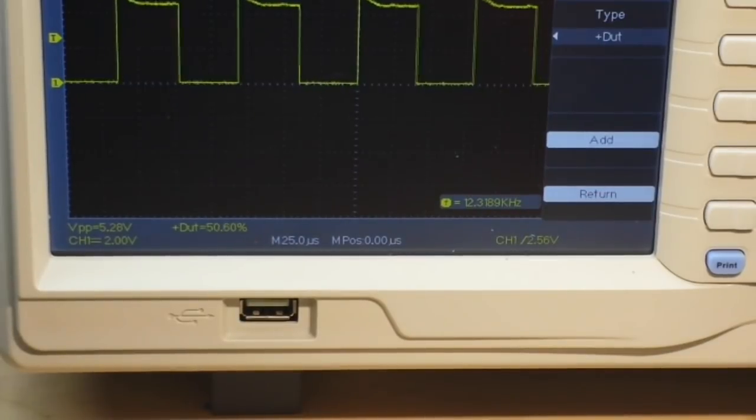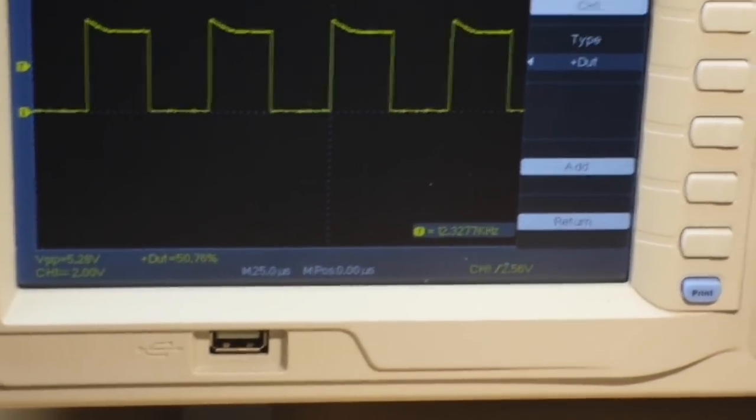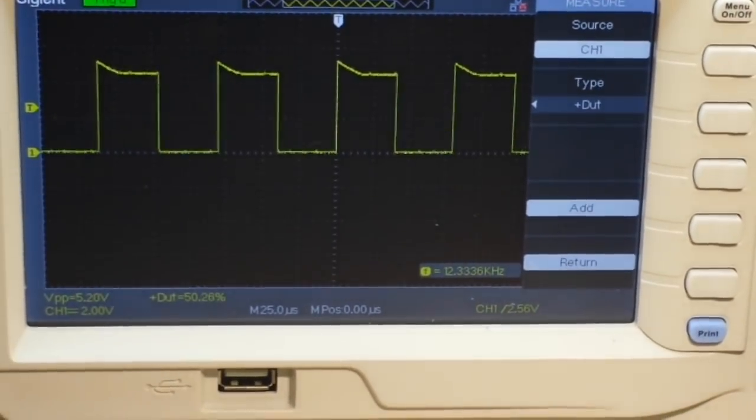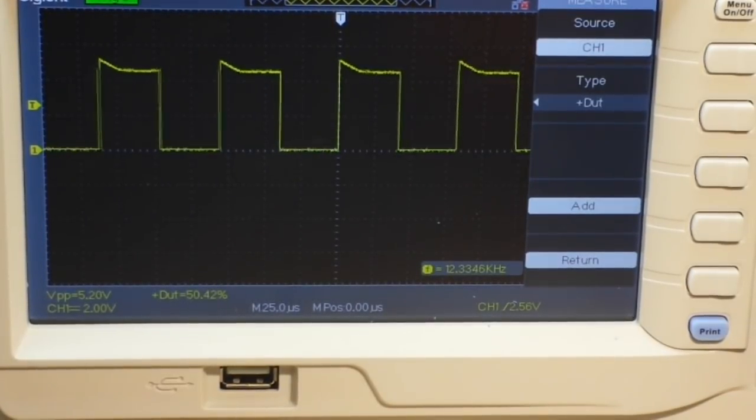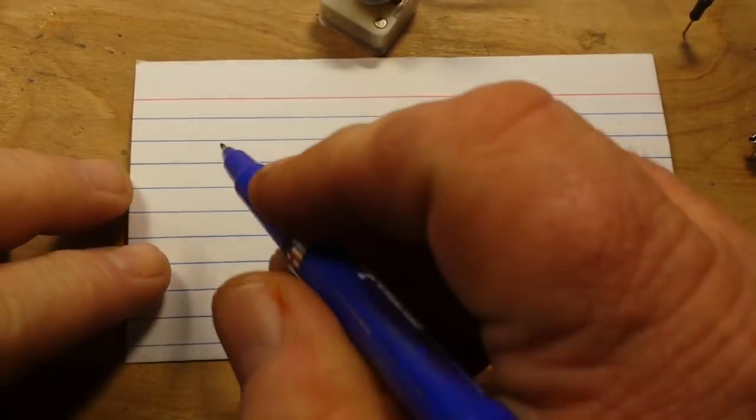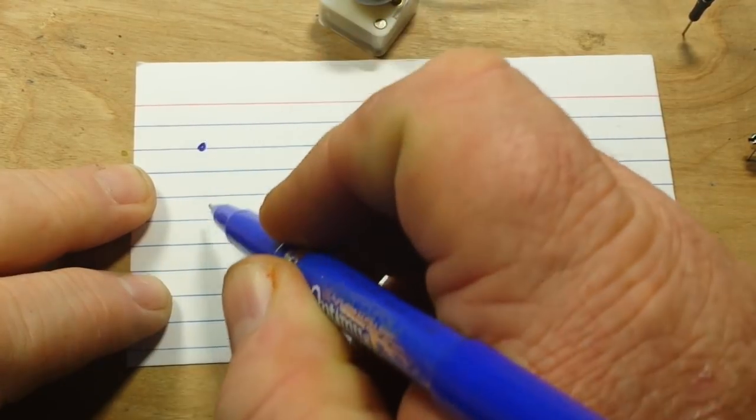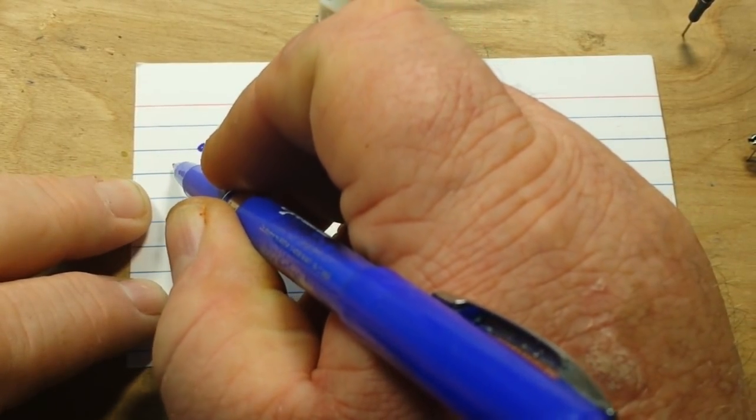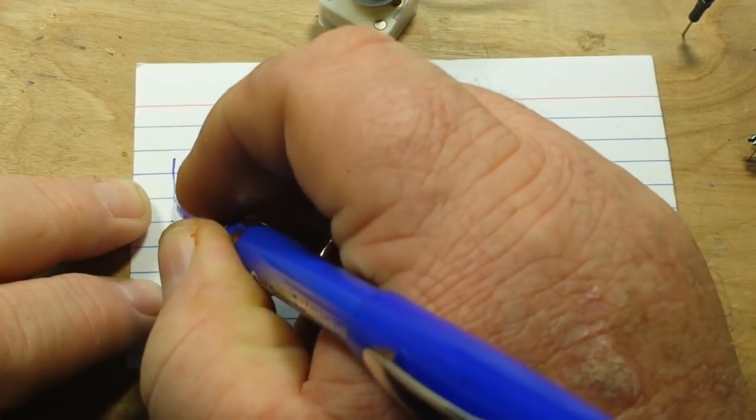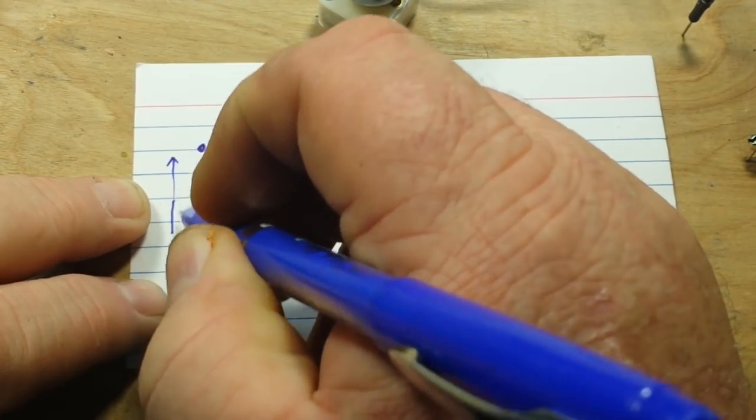Alright, now we're going to get into part two. We're going to take our square wave and use an integrator circuit and turn it into a triangle wave. I did a video on integrators and differentiators about a year ago. But we talked about this circuit recently. And once you see it, I think you'll know what it is.